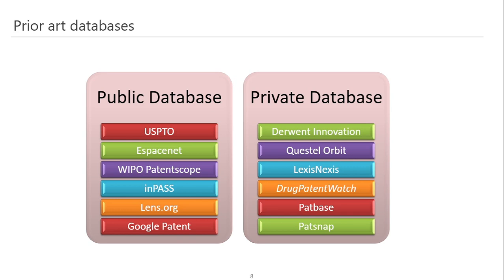Then we have private databases. These databases are very extensive and provide useful utilities to search efficiently in patent databases. Examples include Derwent Innovation, Questel Orbit, LexisNexis, Drug Patent Watch, Patbase, and PatSnap. These are private entities that provide paid databases related to prior art search.